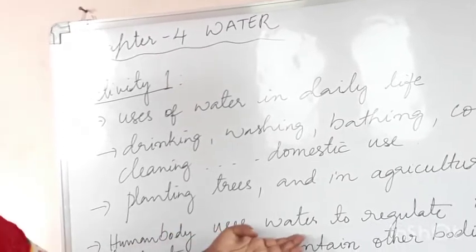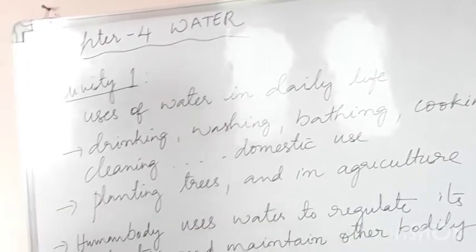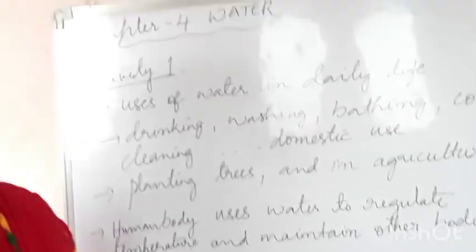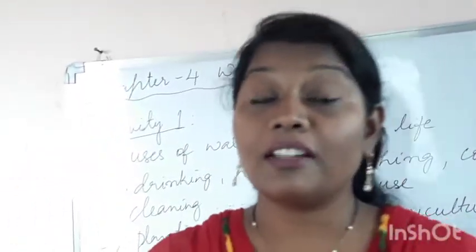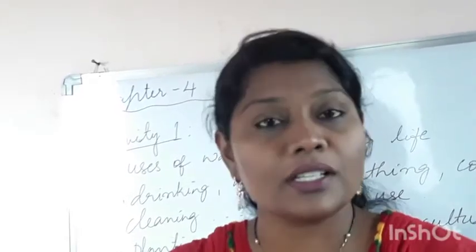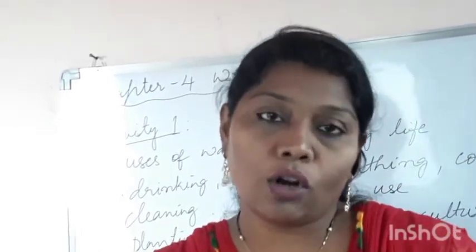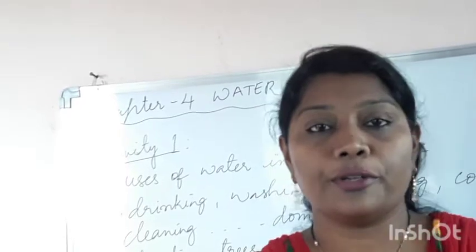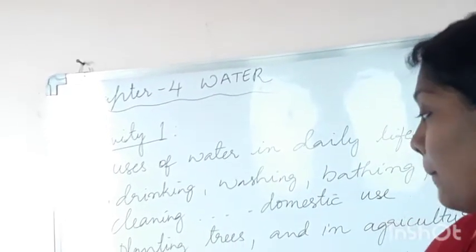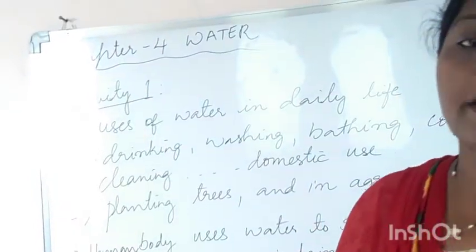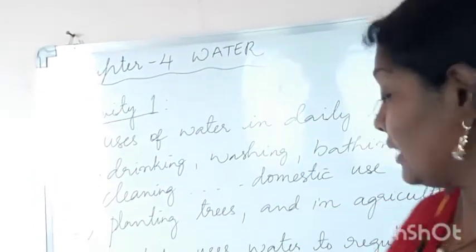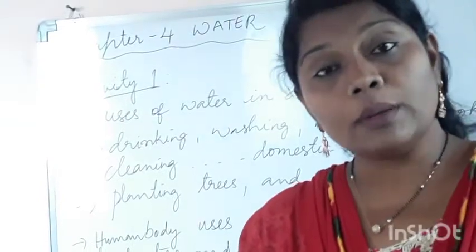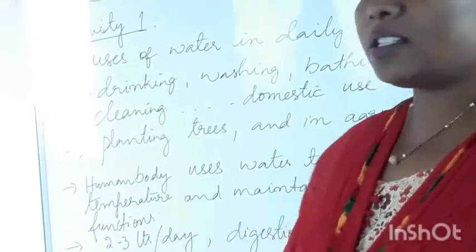Do you know, the human body uses water to regulate its temperature and maintain other bodily functions? Our human body is also completely filled with water — around 70% of the human body is water. This water is used for maintaining and regulating the temperature and other bodily functions. On average, per day, a human body requires 2 to 3 litres of water.